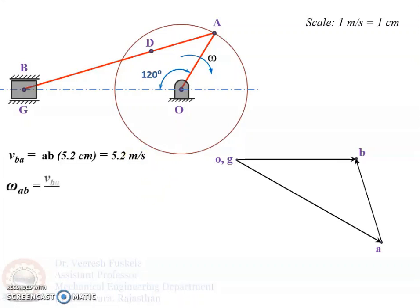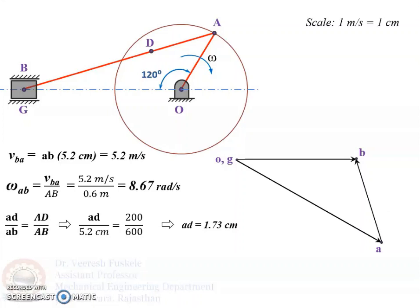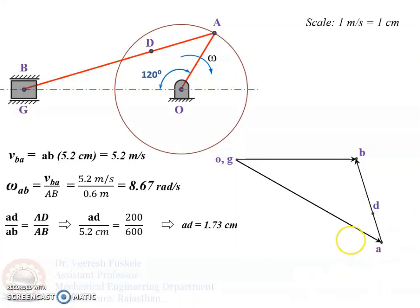We find out the angular velocity of AB — it will be velocity of B relative to A divided by the length of link AB. So the angular velocity is 8.67 radians per second. Now, to plot the intermediate point D, we take the ratio such that AD upon AB in the velocity diagram equals length AD upon length AB. This gives AD as 1.73 cm. We mark this 1.73 cm on the vector AB in the velocity diagram using the compass, and we mark point D. So AD in the velocity diagram is 1.73 cm, and we have obtained point D.